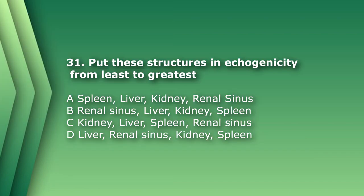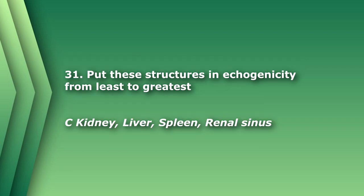Number 31. Put these structures in echogenicity from least to greatest. A. Spleen, liver, kidney, renal sinus. B. Renal sinus, liver, kidney, spleen. C. Kidney, liver, spleen, renal sinus. D. Liver, renal sinus, kidney, spleen. Out of all these, the kidneys are the least hyperechoic and the renal sinus is the most hyperechoic. So the answer is C.